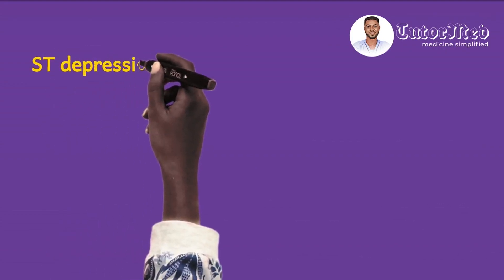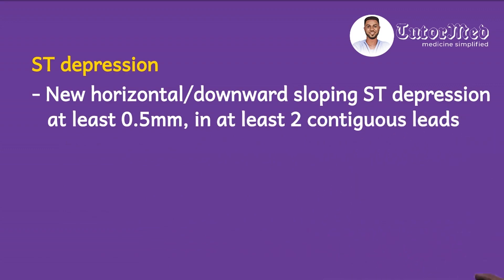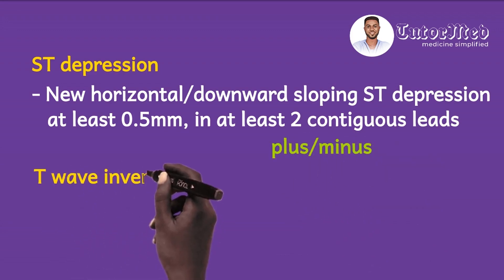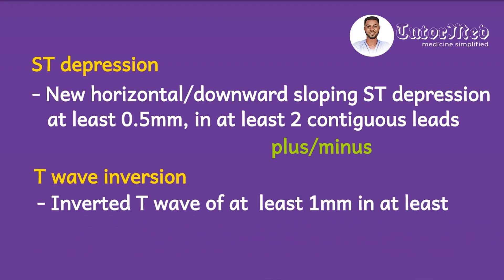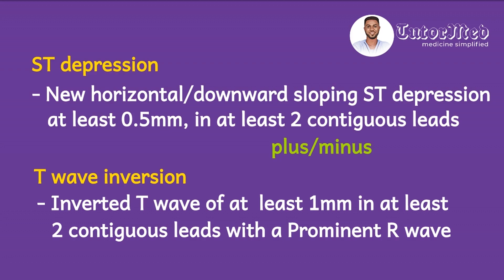Now let's look at the ECG criteria for these changes — fortunately they are not as complex as those of STEMI. For ST depression, the rule says there should be a new horizontal or downward-sloping ST segment depression of at least 0.5 millimeters, or half of a small box, below the baseline in at least two contiguous leads. You may have ST segment depression with or without T wave inversion. The rule for T wave inversion says you should have an inverted T wave of at least one millimeter below the baseline in at least two contiguous leads, and the preceding QRS complex should have a prominent R wave.